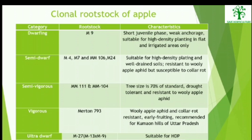M4, M7, MM106, and M24 are suitable for high-density planting and well-drained soils, resistant to woolly apple aphids but susceptible to collar rot. M111 and M104: the tree size is 70% of standard, drought-tolerant and resistant to woolly apple aphids. Merton 793 is woolly apple aphid and collar rot resistant, early fruiting, and recommended for the Kumaon hills of Uttar Pradesh. M27 is suitable for high-density planting.